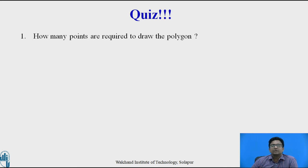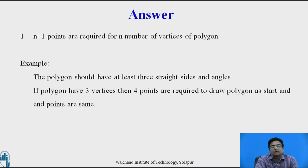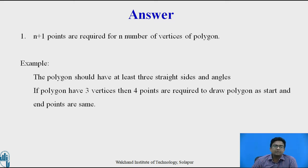How many points are required to draw a polygon? n+1 points are required for n number of vertices of a polygon. The polygon should have at least three sides and angles. If a polygon has three vertices, then four points are required to draw it, as the start and end points are the same — that is, the start and end points are repeated.